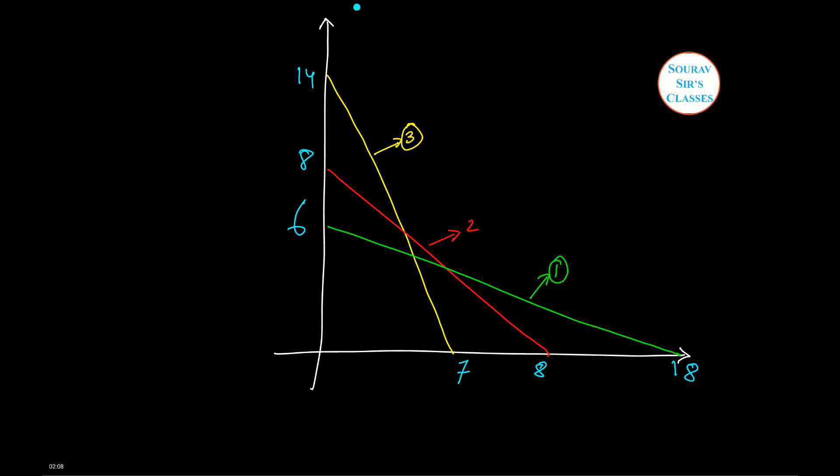Thus this is how the figure will look like. Now let us find the bounded region. The bounded region is the shaded portion that I am doing where the solution will lie. Let this be A, B, C and D where D is 0.